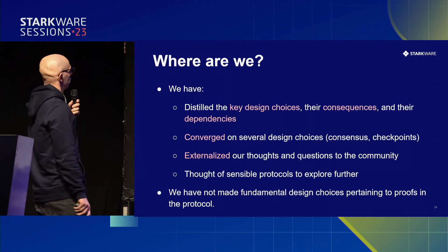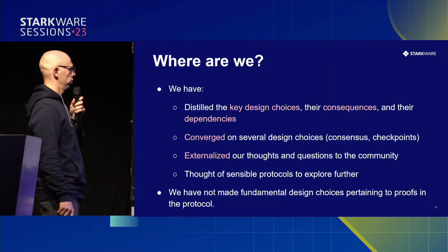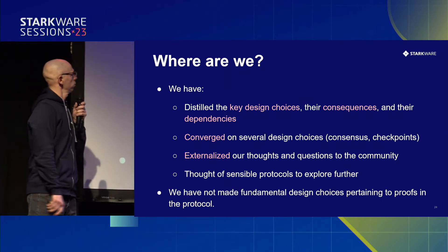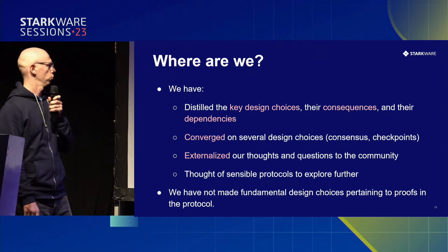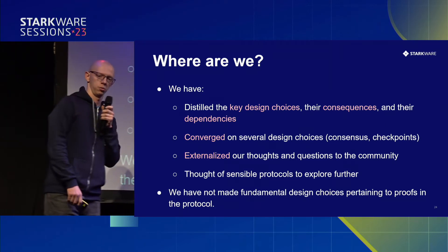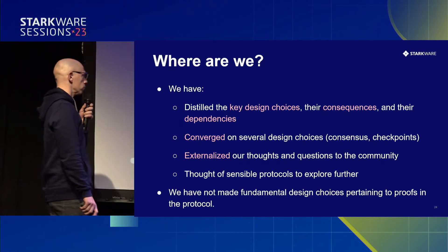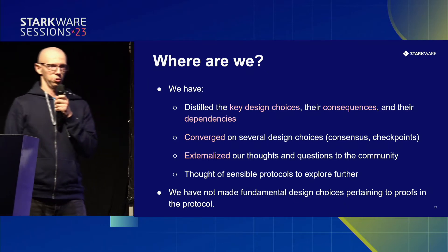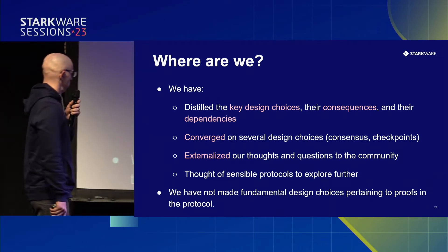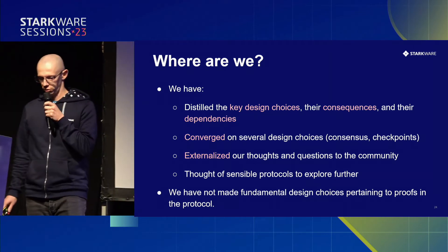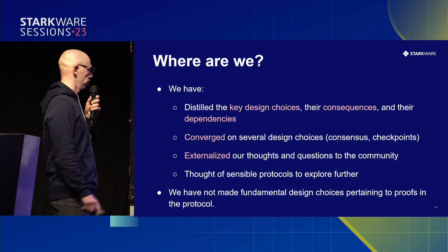So where are we now? We've distilled some key design choices and their consequences and dependencies — things like do we care about certain properties of the consensus protocol, do we want BFT style, longest chain style, how often should it interact with L1. We think we have a pretty good idea of what we want there. We've externalized some thoughts and questions to the community in a series of long posts which you're welcome to read. And we think we have some sensible protocols in mind for the entire operation of Starknet.